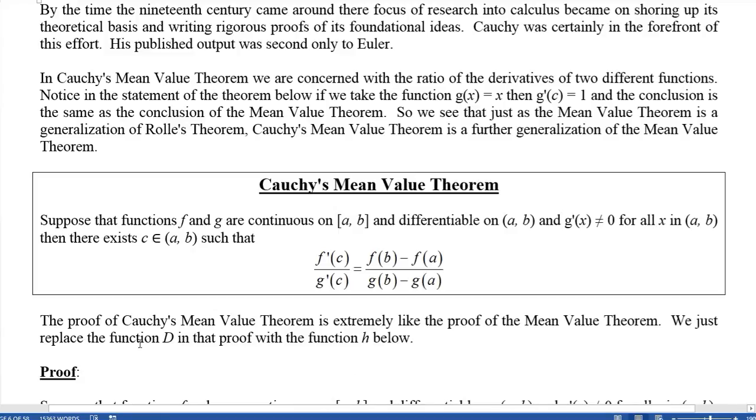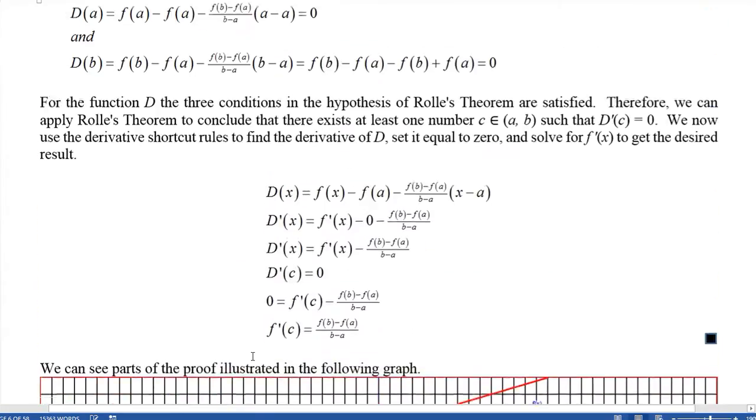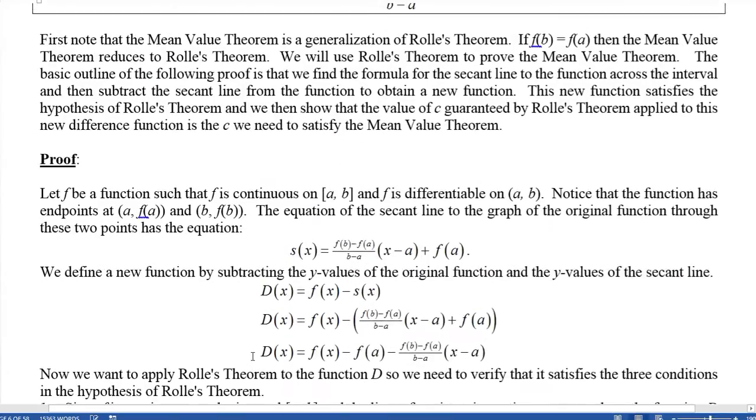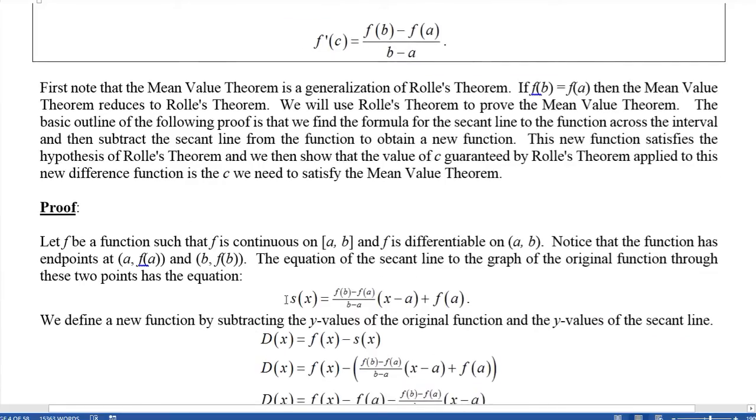Now the proof of Cauchy's Mean Value Theorem is really exactly like the proof of the Mean Value Theorem, but we change the function a little bit. Up here in the Mean Value Theorem, we let the function s(x) or d be this difference, f(x) minus s(x). It was this function right here.